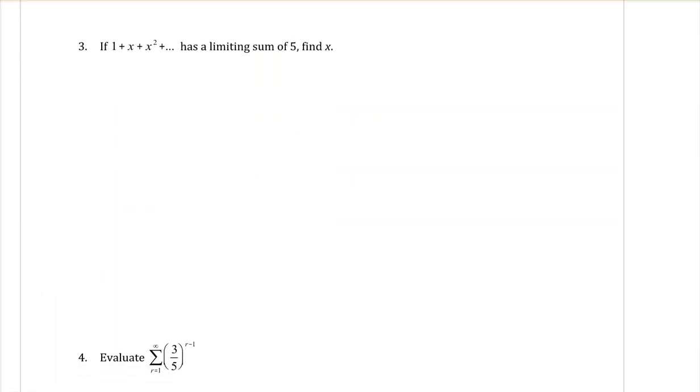Question three. If one plus X plus X squared has a limiting sum of five, let's find out what X is equal to. A is the first term. It's one.